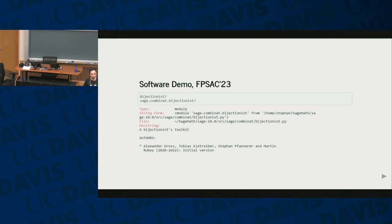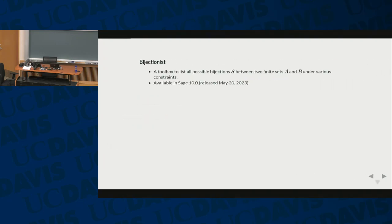You can see it's joint work with Alexander Gross, Tobias Kiedreber, and my supervisor Martin Rubai. And at some point, we figured out it would be nice to have some nice tool to find bijections between two sets A and B that satisfy various constraints. We tried to put it directly into Sage, and we made it in Sage version 10. So you all should upgrade your Sage version. It's up there since May this year.